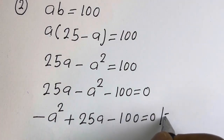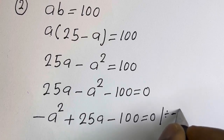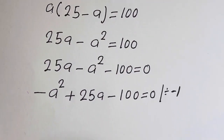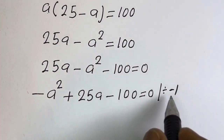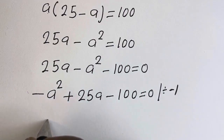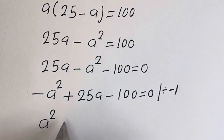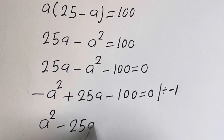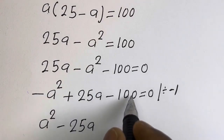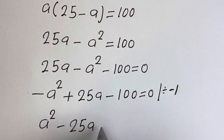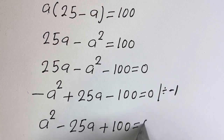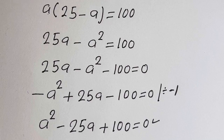Let's divide throughout by minus 1. Minus A squared divided by minus 1, plus 25A divided by minus 1 is minus 25A, minus 100 divided by minus 1 is plus 100, equals 0. So this is a quadratic equation — let's solve this using the quadratic general formula.